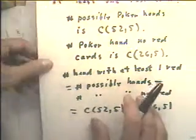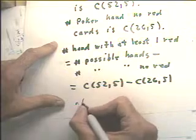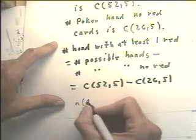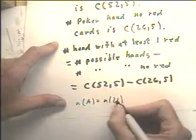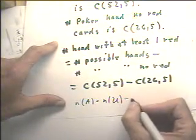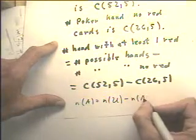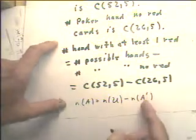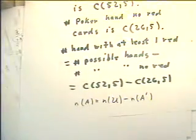And again, this illustrates the principle that the number that have some property is the number in the whole universe, the total number of possible objects or results, minus the number in the complementary set, the number that don't have the property. That's it. Yeah, thank you.